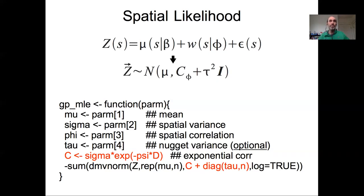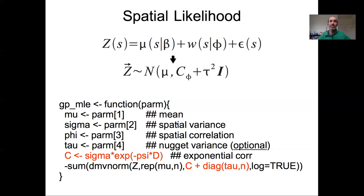We're going to pull in sigma, which is our spatial variance, and phi, which is the parameter in our spatial correlation function. We pull in tau, which is our nugget variance — noting this is optional. If the nugget variance appears to be zero or very close to zero, you might drop this term and just have a spatial variance. Likewise, if there's no spatial correlation at all in the residuals, you wouldn't need the spatial variance and you'd just have the mean and the nugget.